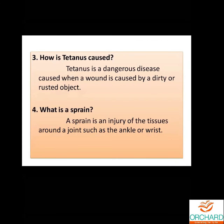Third: how is tetanus caused? Tetanus is a dangerous disease caused when the wound is caused by dirty or rusted objects. If we didn't give proper treatment, the person may develop tetanus disease — it is dangerous. Fourth: what is a sprain? A sprain is an injury of the tissues around a joint such as the ankle or wrist.